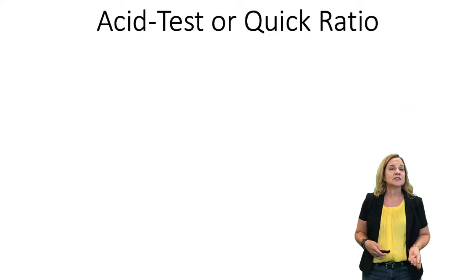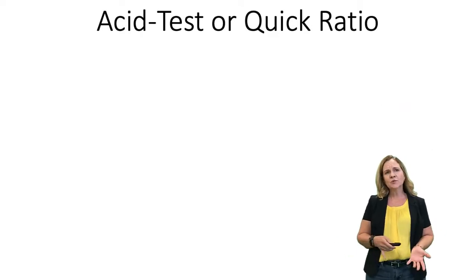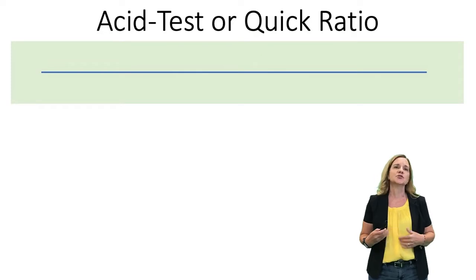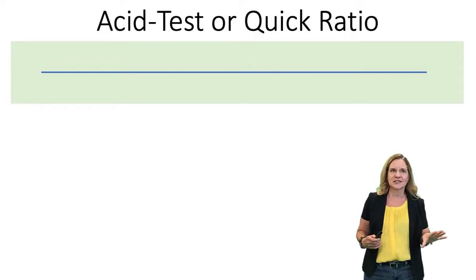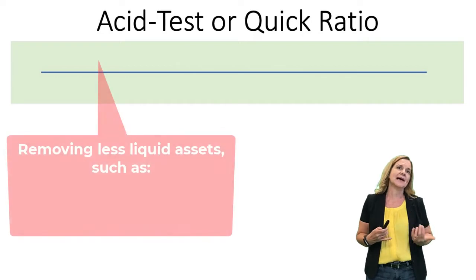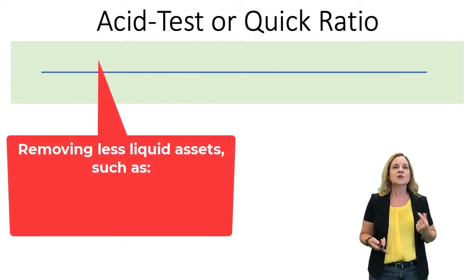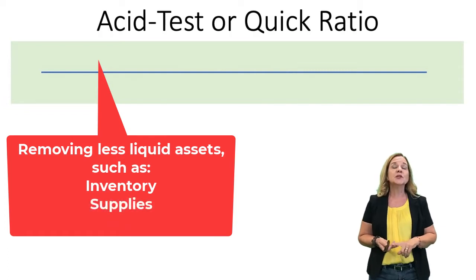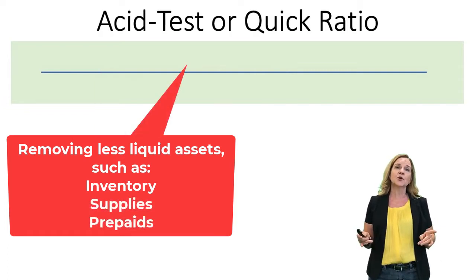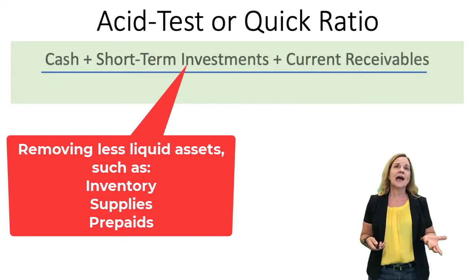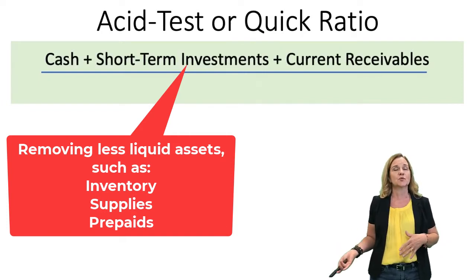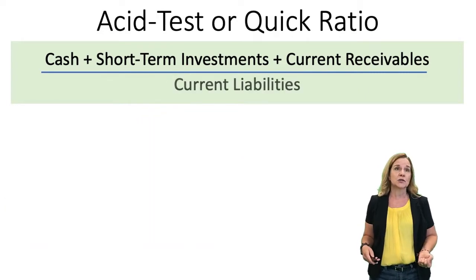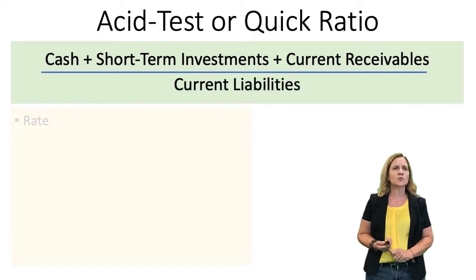The next ratio is the acid test, also called the quick ratio. It's really the same as the current ratio, except now we're removing some of those current assets that aren't quite as liquid — we can't convert them as quickly to cash. Examples are inventory, supplies, and prepaids; those are removed. In the formula, we take cash plus short-term investments plus current receivables, then divide by current liabilities.